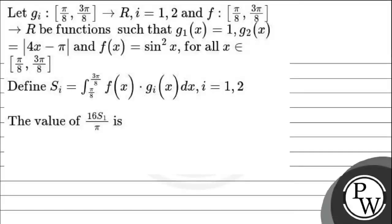Hello Baccio. Let's read this question. The question says: let gi defined for [π/8, 3π/8] → ℝ, i = 1, 2, and f defined for [π/8, 3π/8] → ℝ. We have g1(x) = 1, g2(x) = 4x − π, and f(x) = sin²x for all x in [π/8, 3π/8]. Define Si = ∫(π/8 to 3π/8) f(x)·gi(x) dx, where i = 1, 2. Then find the value of 16S1/π.